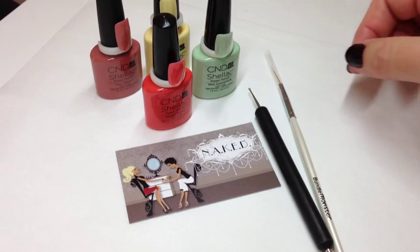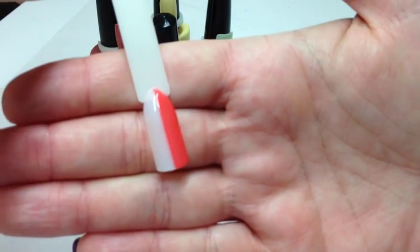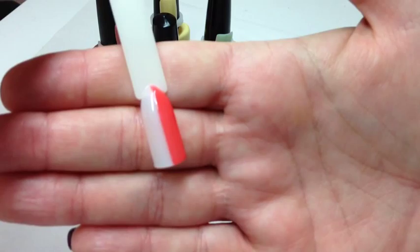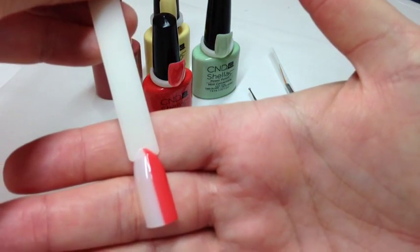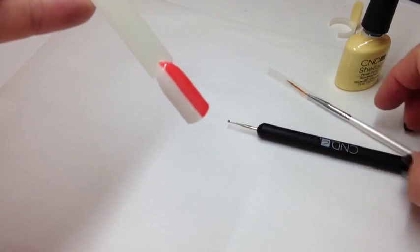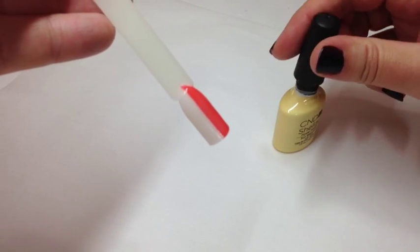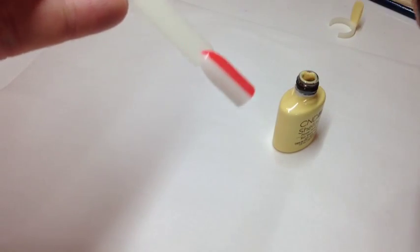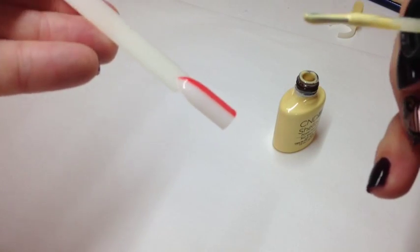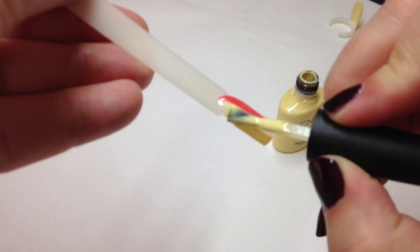I've got a dotting tool and a Bundle Monster striping brush. I've got a rough idea but I'm going to make this up as I go along. I've already cheated with my Colourpop and done half in Desert Poppy, and I'm just going to do the other half in Sun Bleached. I'm just going to paint this half in Sun Bleached.